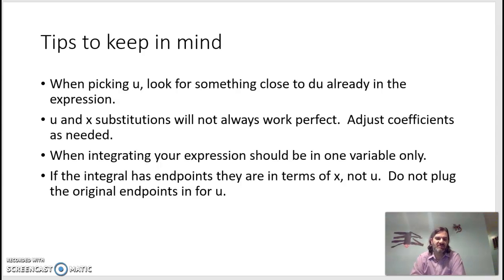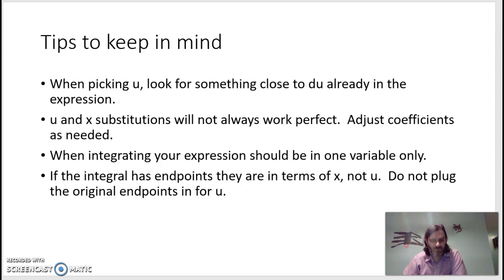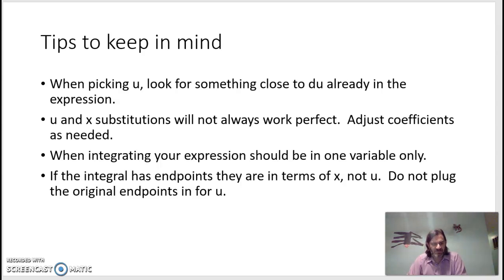When deciding to pick a u, look for something where you can also see its derivative present in the integrand. When we do the substitution, the derivatives may not match up perfectly — usually there are some coefficients that need to be adjusted. We also need to stay completely in terms of u when we do the integration, so we can't have any x's remaining.